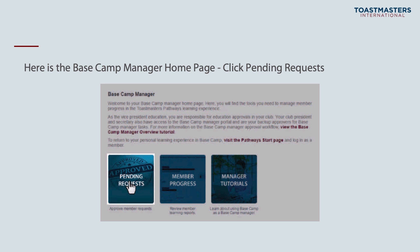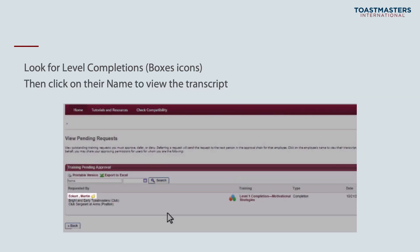To validate a level completion, click on pending requests. This is your inbox for both level completion and external training requests. You'll see the boxes icon for level completions. Click the member name to view their transcript and see what they say they've done, then look up the required projects to complete that level. As vice president education, you'll know if they've completed their required projects. If you're not sure, you can use the search box in the top right of Basecamp to look up what's required on that path and level.